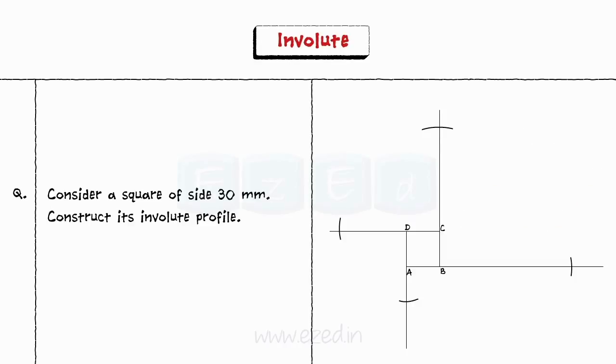Step 4. From the given points, draw a smooth curve. This is the required involute curve of a square.